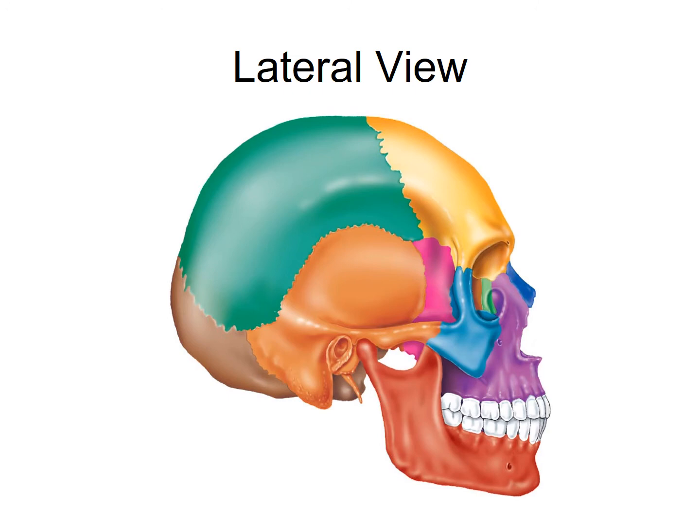Lastly, the only other bone I'll identify from this lateral view will be the maxillary bone — and there are two of them, which we'll look at in the anterior view as well. And here we have the occipital bone.